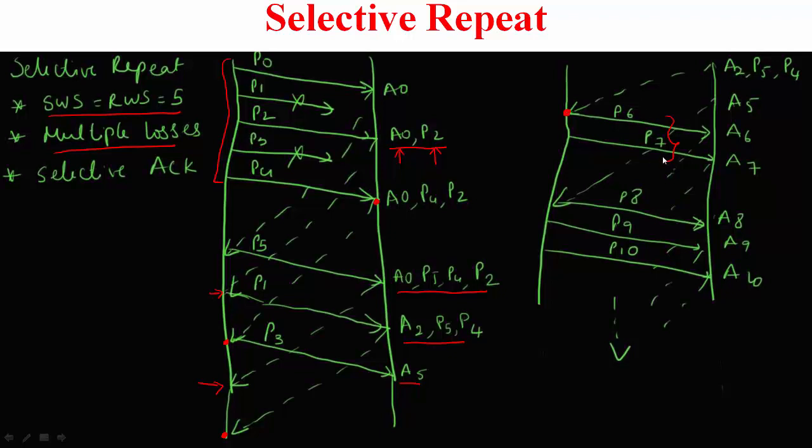Similarly, when this ACK represented here comes, it has acknowledged until A5 and you have A6, A7 already out there. Thereby you're permitted to send 3 more to make the count 5. Thereby you send P8, P9, P10.